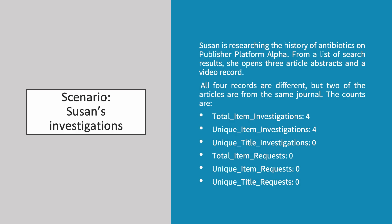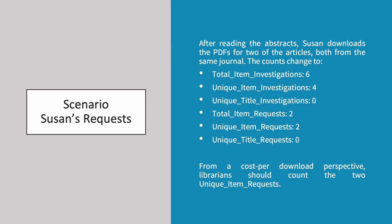In this scenario, Susan is researching the history of antibiotics on publisher platform Alpha. From a list of search results, she opens three article abstracts and a video record. All four records are different, but two of the articles are from the same journal. The counts are 4 total item investigations, 4 unique item investigations, and 0 unique title investigations, total item requests, unique item requests and unique title requests.